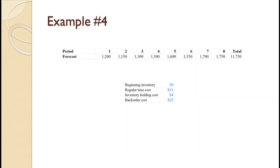This final example is for you to try. The demand for 8 periods is shown on the slide. There is adequate capacity to produce all the units in regular time. There is beginning inventory of 50 units. Regular time production costs $11 per unit. The inventory holding cost is $4 per item per period. Back order costs are $25 per item per period. Pause the video and try to work this problem on your own, then use the video to check your work.